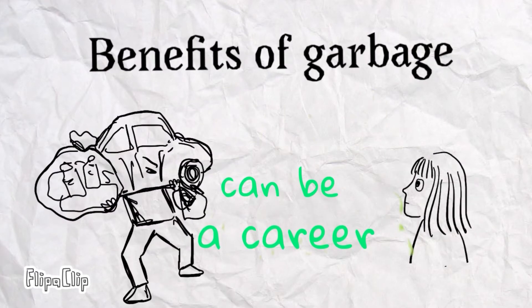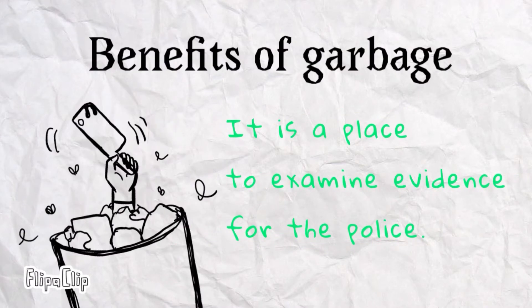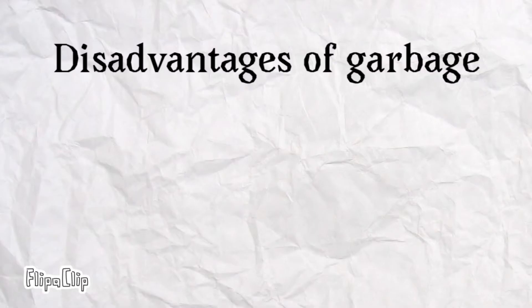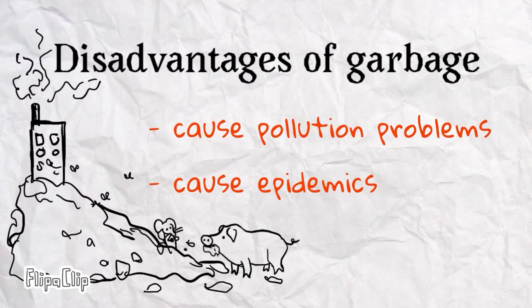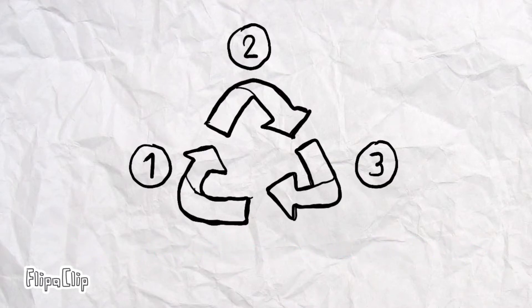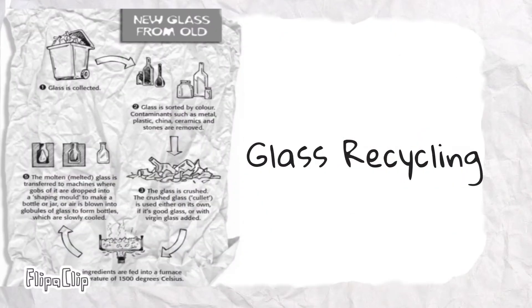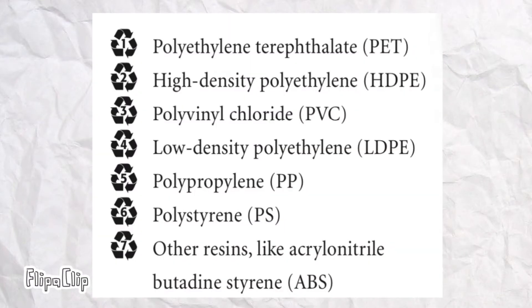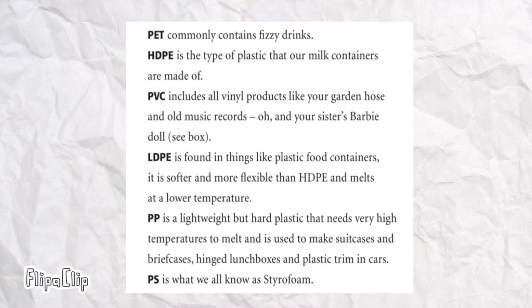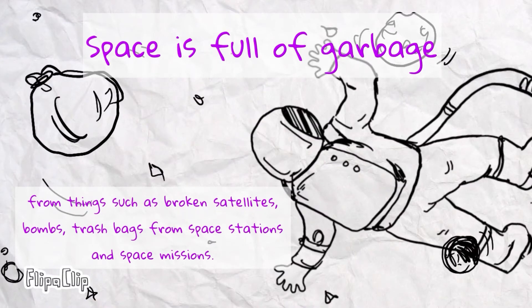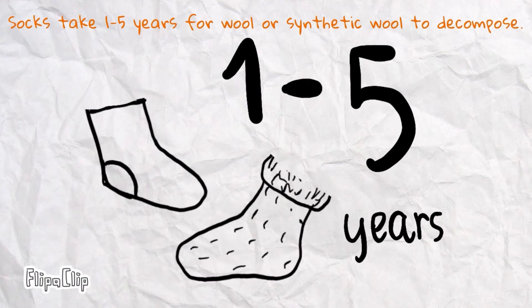I have been reading about the benefits of garbage, the meaning of the error symbol loop-da-loop, how to make recycled glass and plastic, the benefit of codes specified in plastic which help us differentiate types of garbage and materials used in production, the space junk problem, and the decomposition of socks.